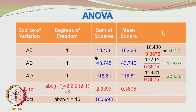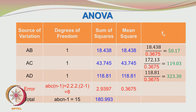When you look at AB, the same procedure is followed: sum of squares divided by degrees of freedom gives the mean square. We are talking about a single combination, so we have a single degree of freedom. Here 18.438 divided by the mean square error of 0.3675 — which is constant for all effects and interactions — gives 50.17. This is obviously higher than 5.32 and hence we reject the null hypothesis. We are finding the F value and comparing it with the critical value of 5.32.